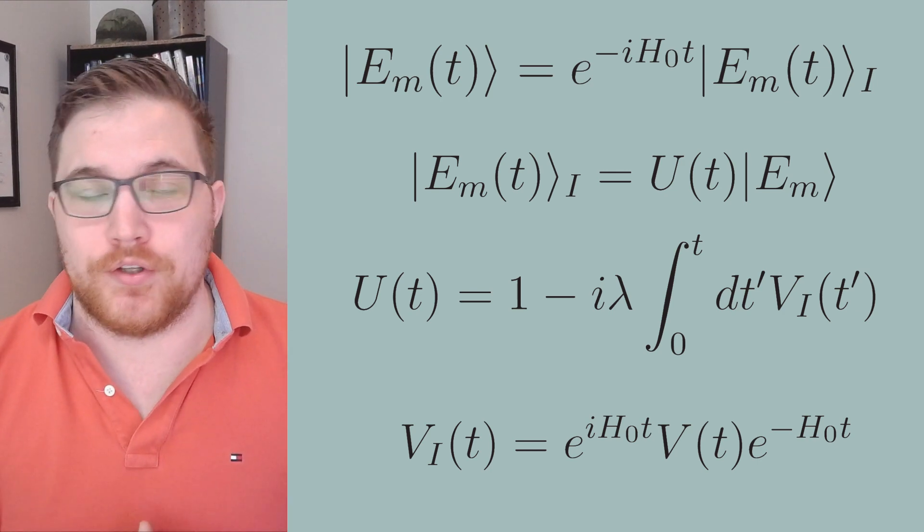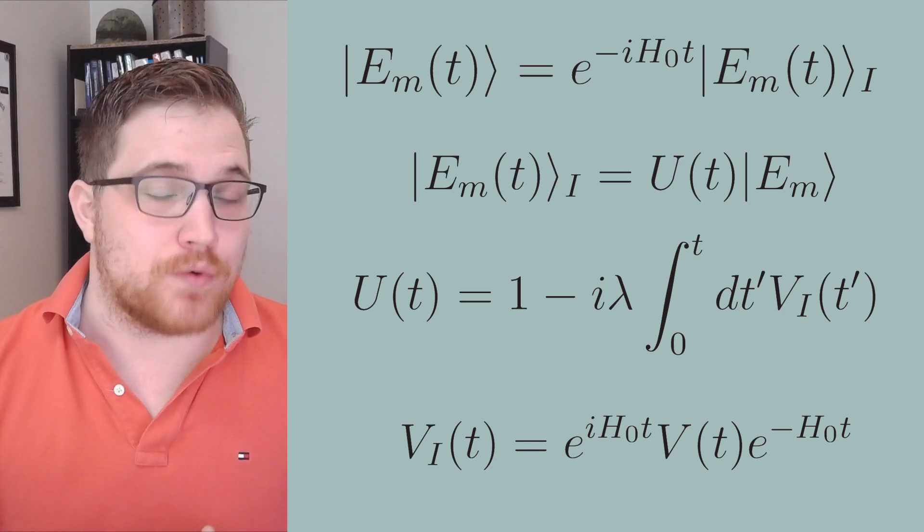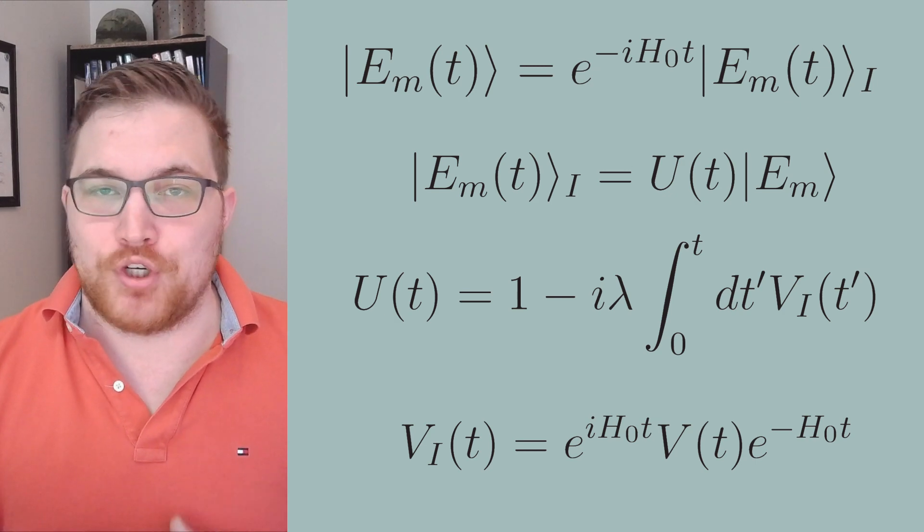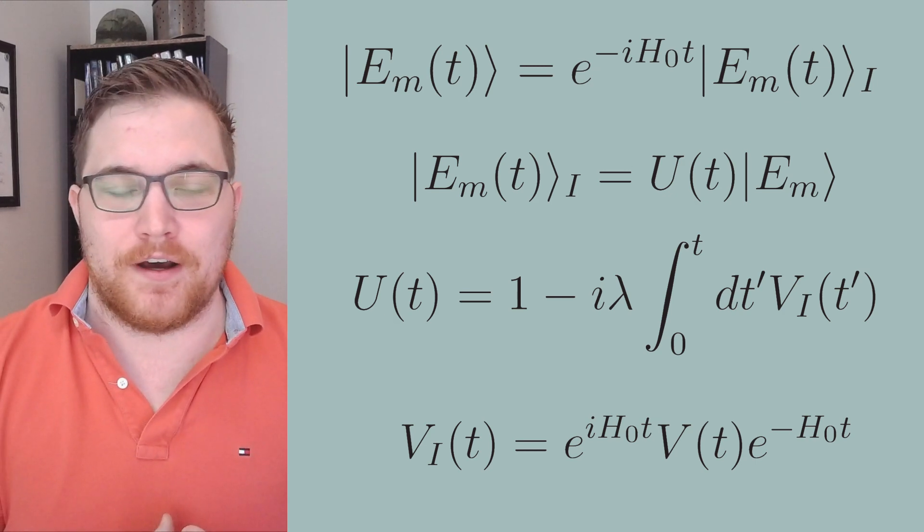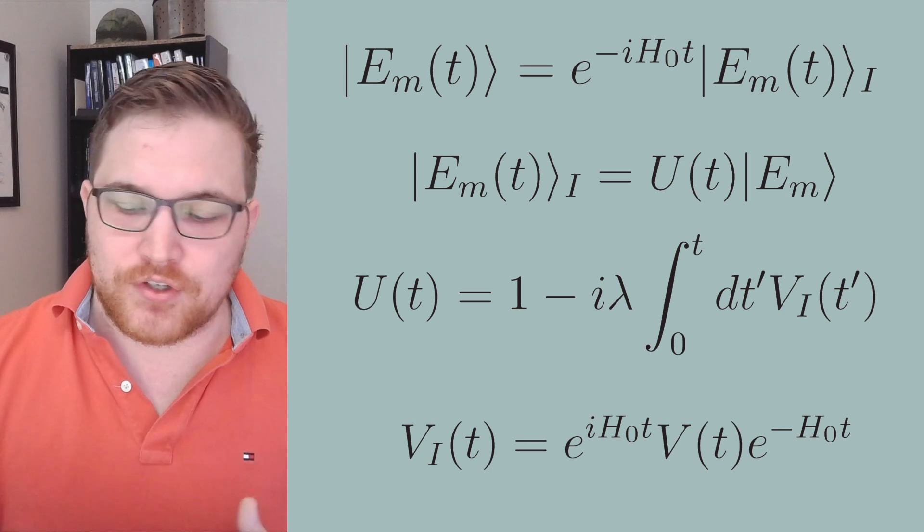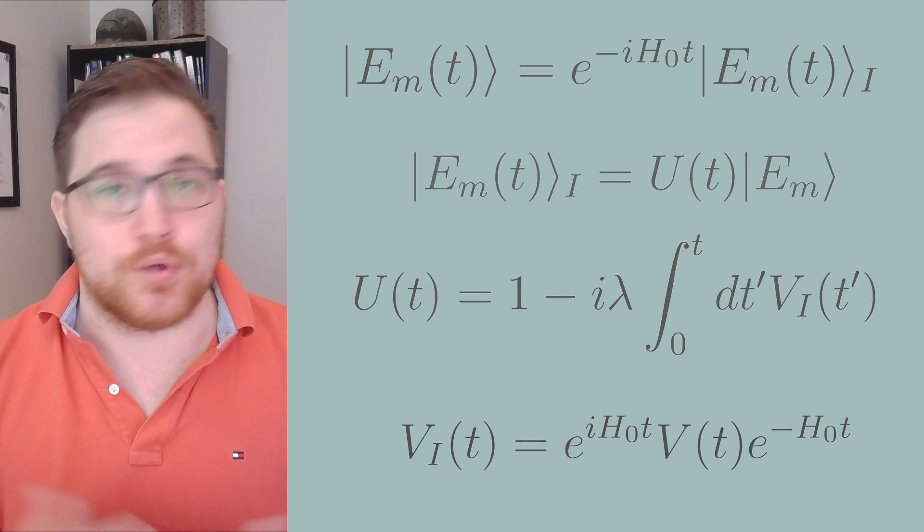The operator v could certainly be independent of time in the Schrödinger picture, but leaving the assumption of potential time dependence of v in the Schrödinger picture doesn't really change the difficulty of our derivation. So we'll leave it in.